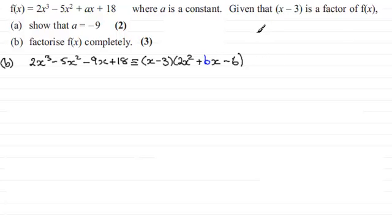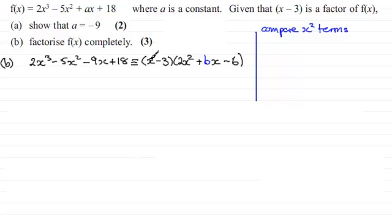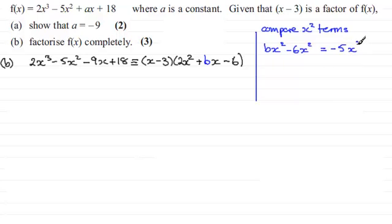All we've got to do now is find what B is. We can compare either the x squared terms or the x terms — I'll show you both methods. Comparing the x squared terms: expanding gives Bx squared from x times Bx, and minus 6x squared from minus 3 times 2x squared. These should sum to minus 5x squared, so Bx squared minus 6x squared equals minus 5x squared, which means B must equal 1.